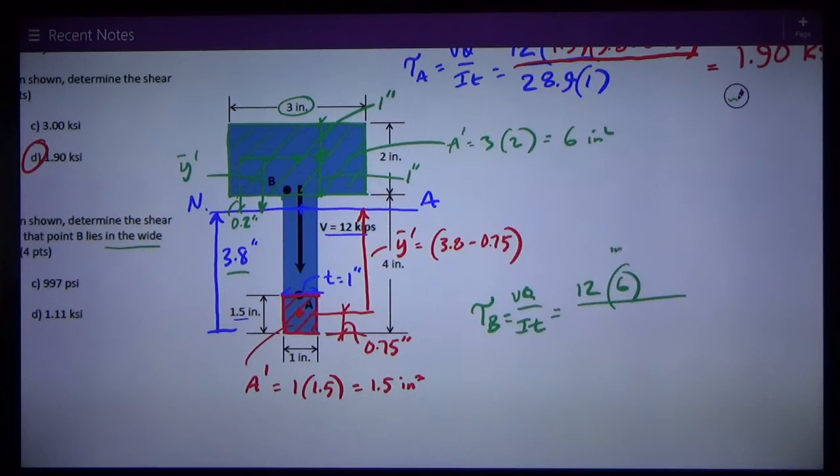So Q is A prime, 6 square inches. Y bar prime is 1 plus 0.2, which is one way of figuring it, amongst many. I is at 28.9, T is the thickness of the cross section at B, and the wide part is 3 inches.